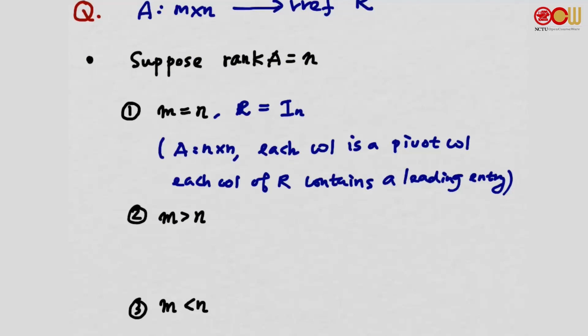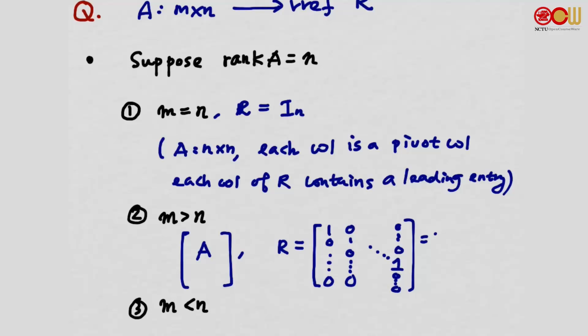Second case: m > n, so A is a tall matrix with more rows than columns. With rank(A) = n, R has n non-zero rows and n leading entries. Since R has only n columns, each column is a standard vector. So R has the form [e₁, e₂, …, eₙ]ᵀ, where these are standard vectors of ℝᵐ.